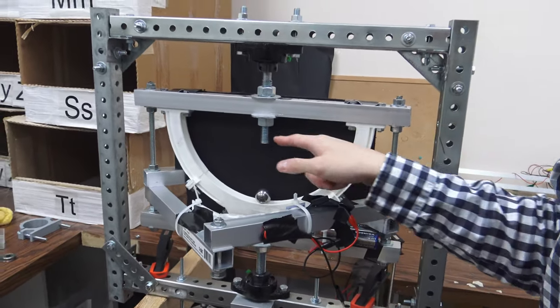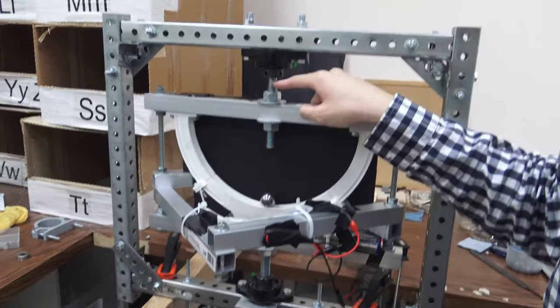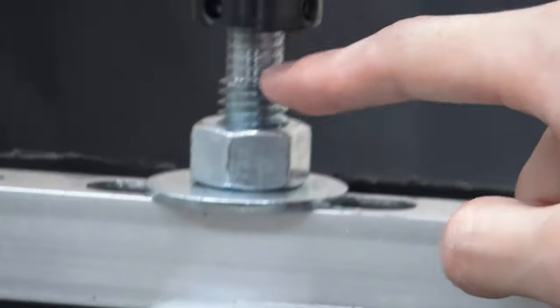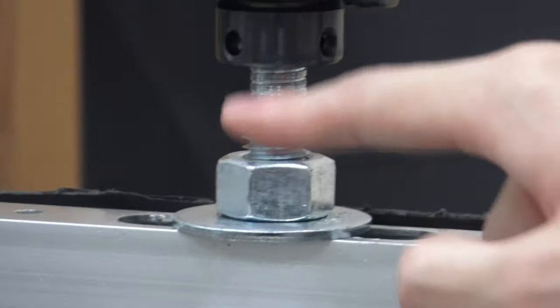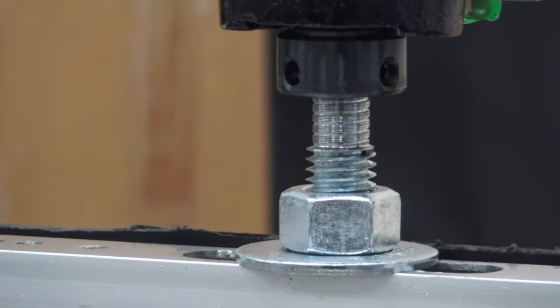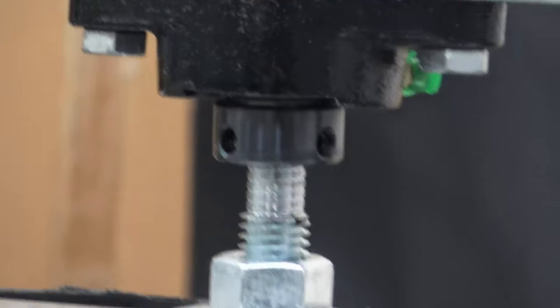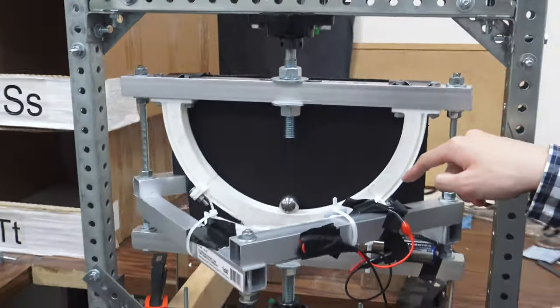We made our shaft essentially by using this piece of, I believe it is 5/8 inch threaded rod, and then we just use the lathe and we reduce the diameter of it so that it fits into these bearings. Our main hoop is a 3D printed part.